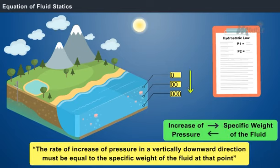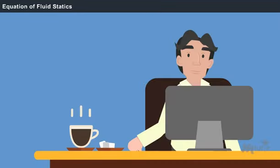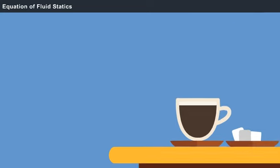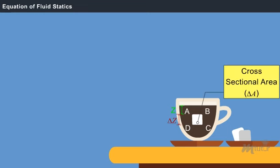The law states that the rate of increase of pressure in the vertically downward direction must be equal to the specific weight of the fluid at that point. Consider a glass of coffee that is kept on the table for more than an hour. Assume a sugar cube A, B, C, D present inside the coffee at a distance of Z from the free surface with height delta Z and cross-sectional area delta A. And let the density of the coffee be rho.